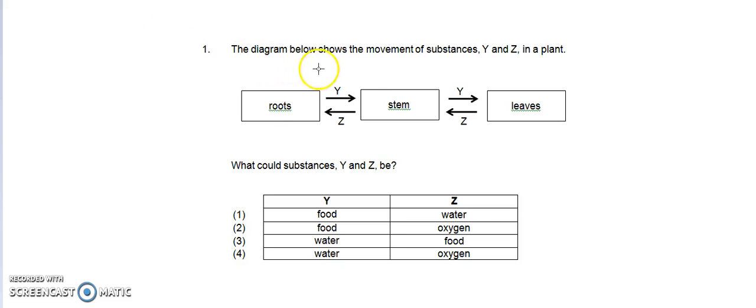The diagram below shows the movement of substances Y and Z in a plant. So the roots here, we have the stem and the leaves, and you can see the Y moves from the roots to the stem to the leaves. And as for Z, it moves from the leaves to the stem to the roots.